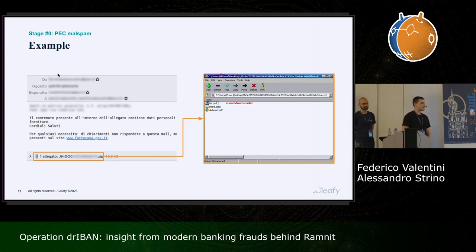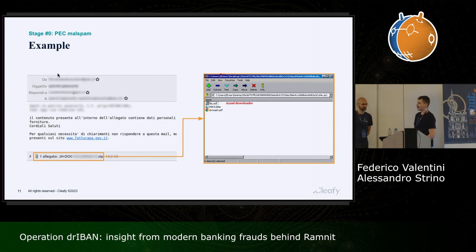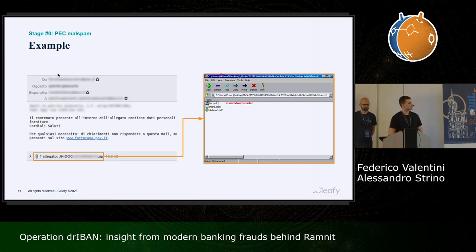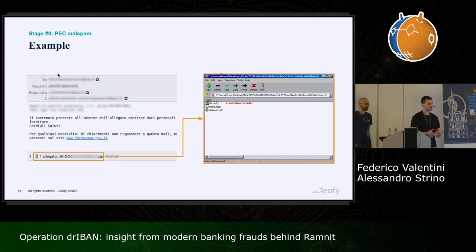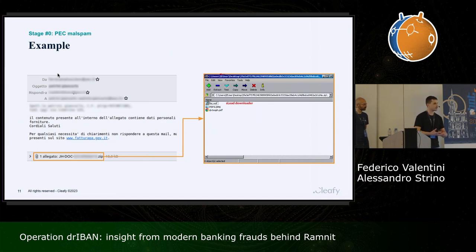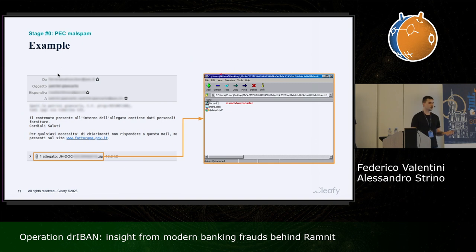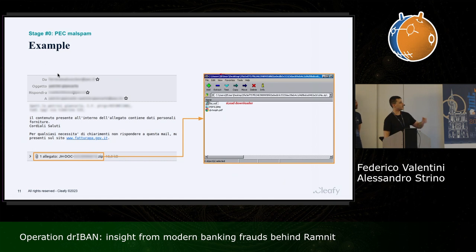Here is an example of one of their email templates. It's a pretty simple email trying to fake some sort of government communication. All emails typically have a ZIP file as an attachment. If you open the ZIP attachment, you find three files: a PDF, a JPG, and a third file. If you try to open the PDF, it's corrupted; the JPG is corrupted as well.